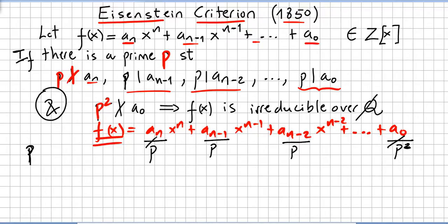It's quite easy — you look at the first coefficient and the last one and try to find some prime p. This is a really handy theorem.